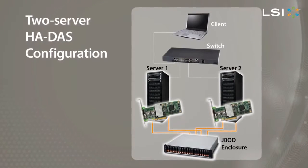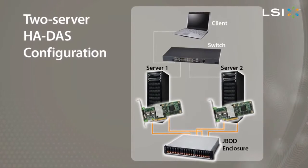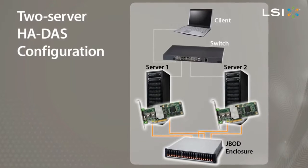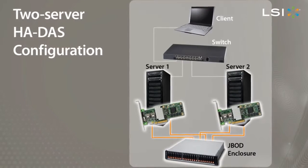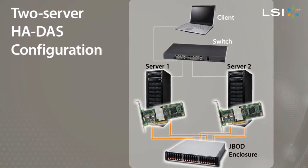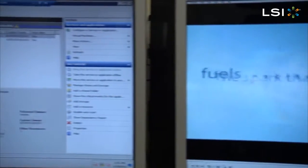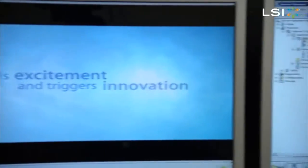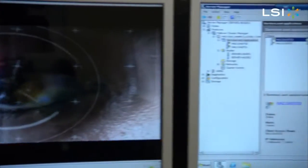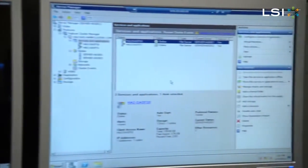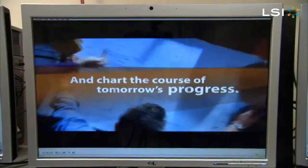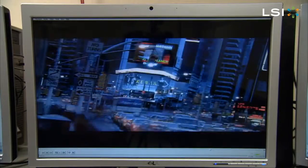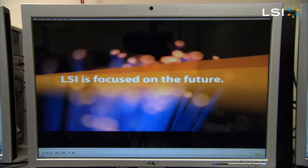This allows each server access to all of the drives in the JBOT while also allowing the HA controllers to communicate with each other. With the Microsoft Windows clustering software running, Server 1 and Server 2 are each supplying the client with a separate application — in this case a video — each one sourcing different drives in the JBOT.